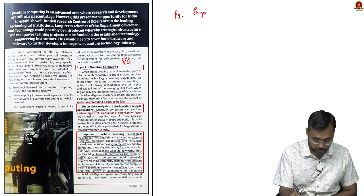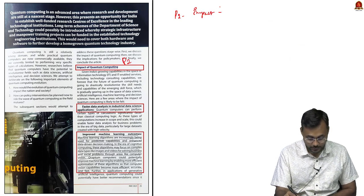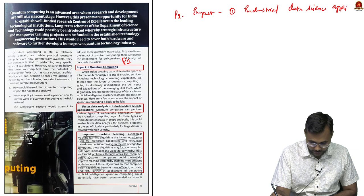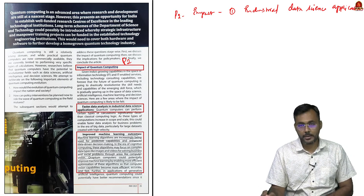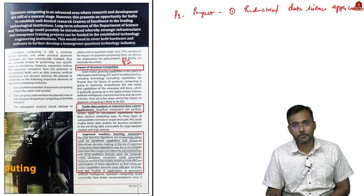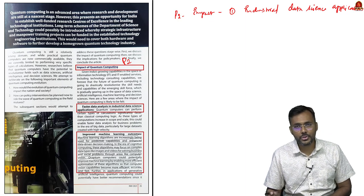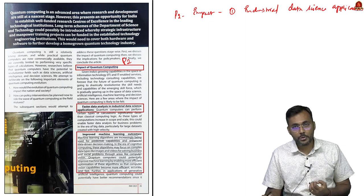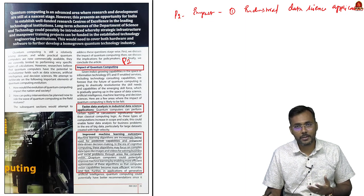Moving to the impact of quantum computing: it can be used in industrial data science applications. For example, when developing a new medicine, quantum computing can check performance on a model at much faster speeds. Similarly, it helps in designing complex manufacturing systems or testing automobile performance.